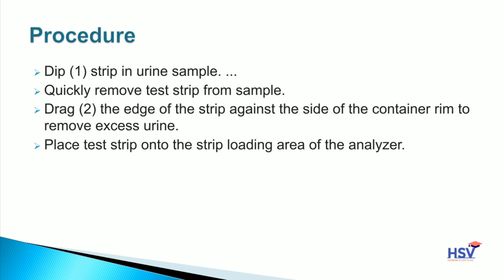Procedure for strip method: Dip the strip in the urine sample, then quickly remove it from the sample. Drag the edge of the strip against the side of the container to remove excess urine. Place the test strip onto the strip blotting area of the analyzer. Match the color developed on the strip with the color chart on the bottle to determine the concentration of the constituent — for example, glucose — present in the patient's urine sample.